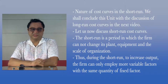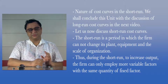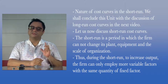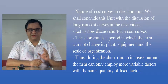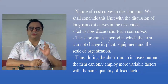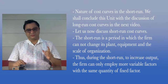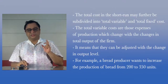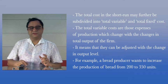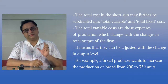As we have already discussed, the short run is a period in which the firm cannot change its plant, equipment, and the scale of organization. Thus, during the short run, to increase output, the firm can only employ more variable factors with the same quantity of fixed factor. The total cost in the short run may further be divided into total variable and total fixed cost.